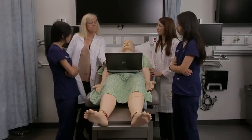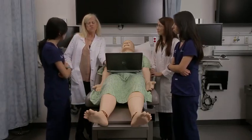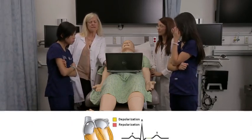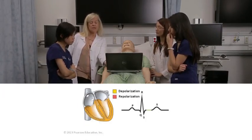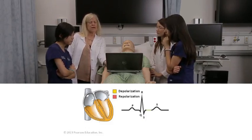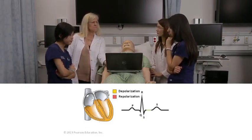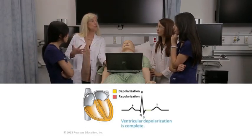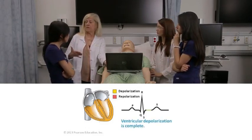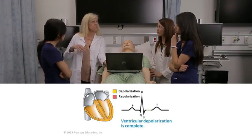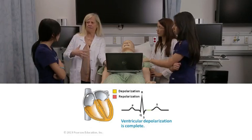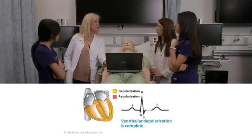During the second isoelectric line — the one between the end of the QRS complex and the beginning of the T wave — there's just no new electrical activity being generated. The ventricles have already depolarized and we're waiting for them to begin to repolarize.